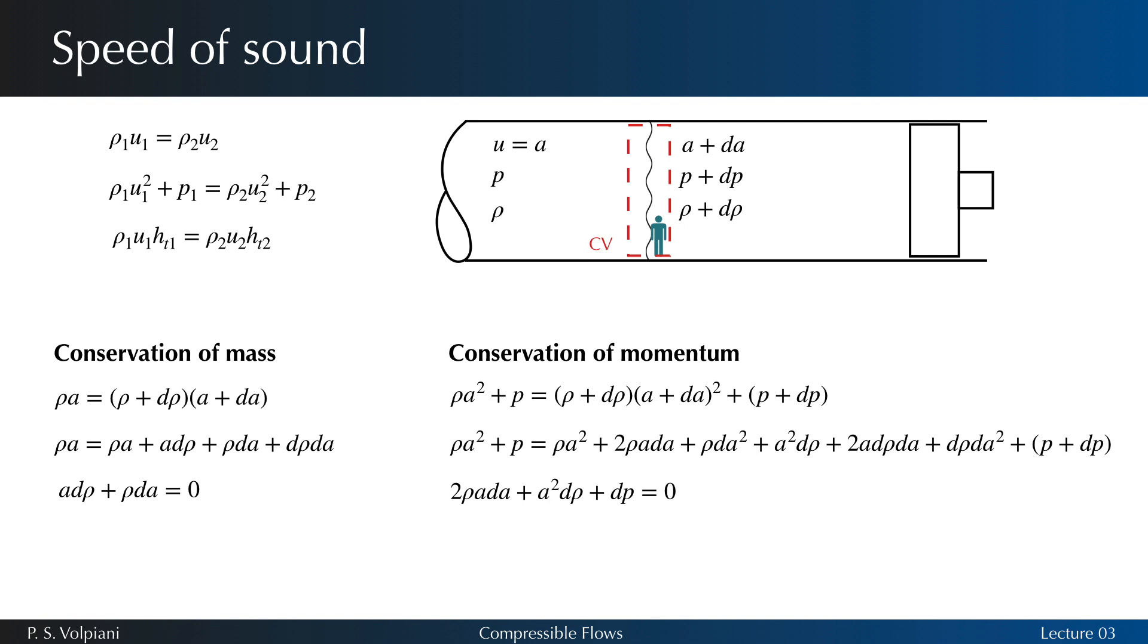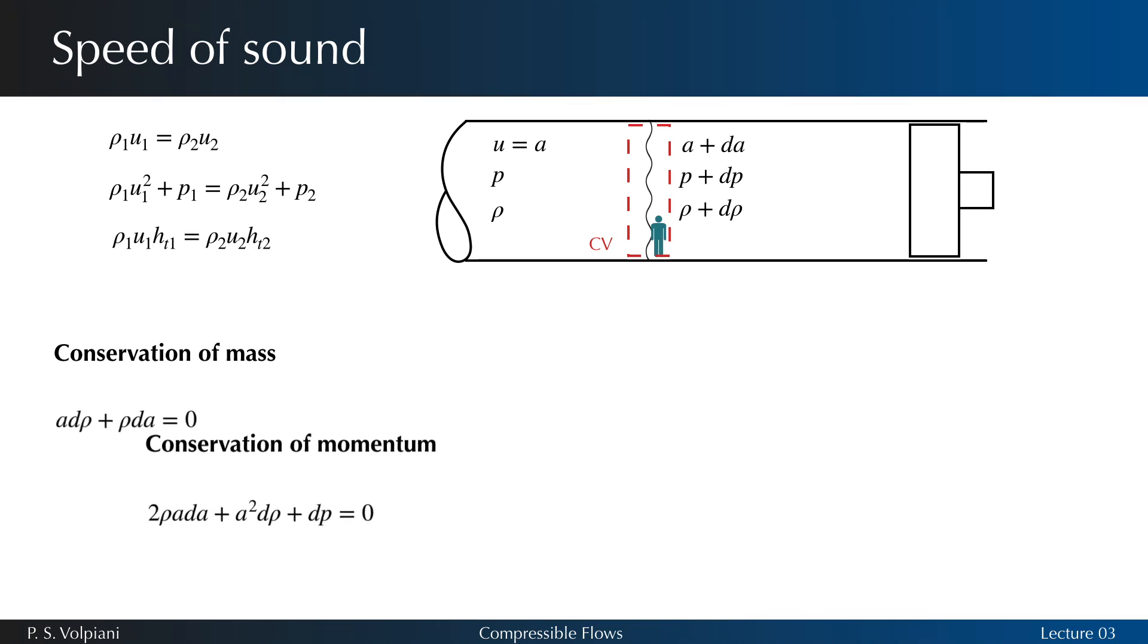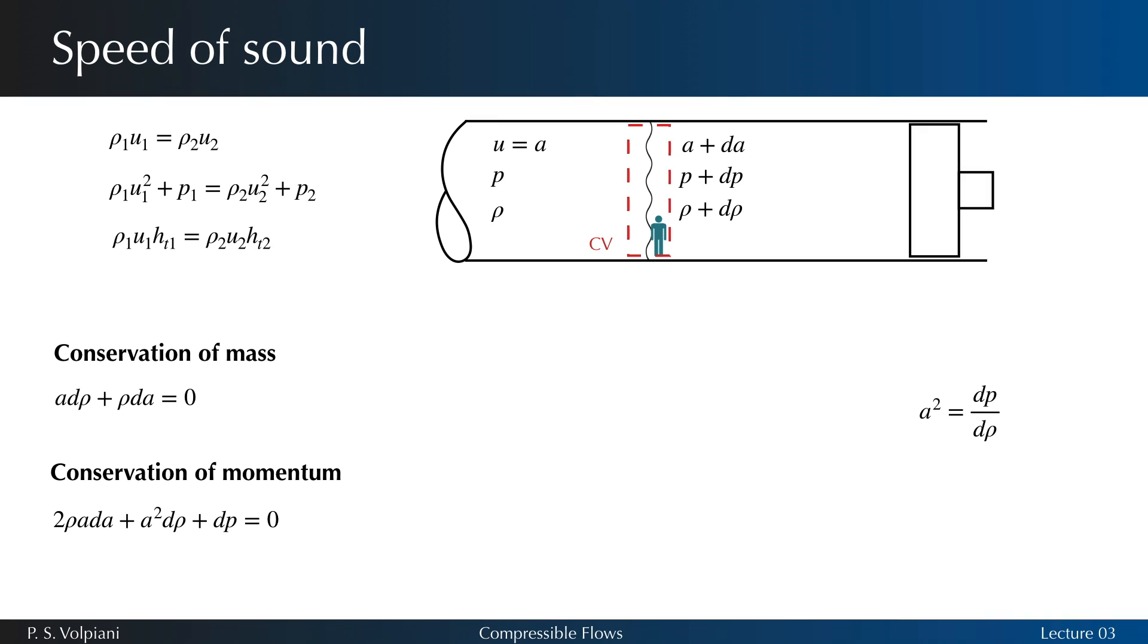Then we can write the continuity equation as follows. The product of two small quantities, d rho times da, is very small in comparison to the other terms and can be ignored. By proceeding similarly, the conservation of momentum gives us the following expression. Replacing the last relation, rho da by minus a d rho, we obtain immediately a squared equals dp d rho.